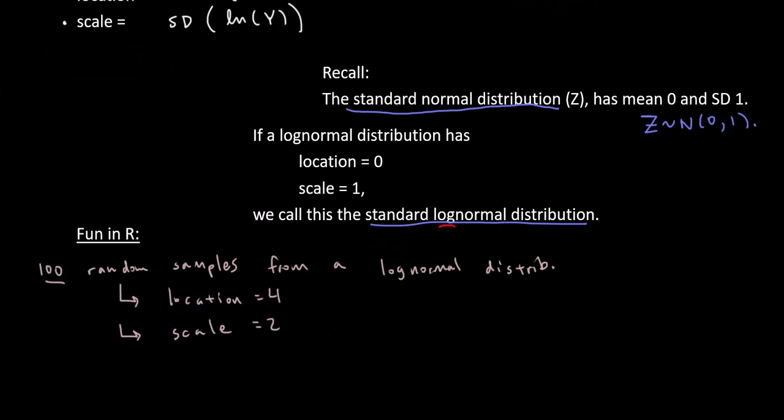And what I plan to do is create a histogram of this data. I'll call these 100 values Y. I'll take a hist of Y. And what we would expect to see because they're from a log-normal distribution, we should expect to see a right skewed distribution.